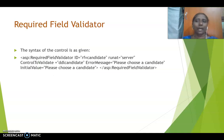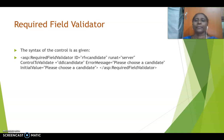The first one is required field validator. It is used whenever a control should be filled with some data — it should not be empty. In that case, we can use required field validator. Here, we will be assigning two properties: one is the control to validate, which is nothing but a text box or label box, and the next one is the error message, which is the message displayed in case that control is empty.